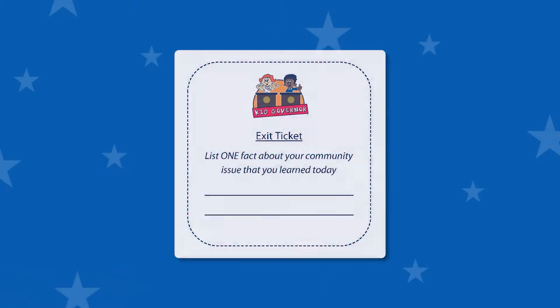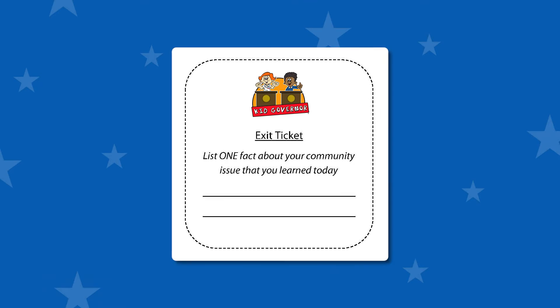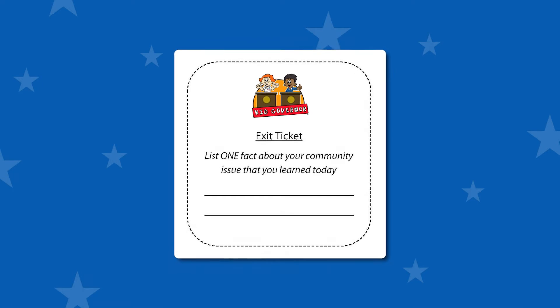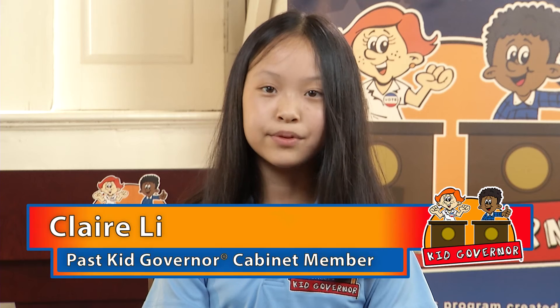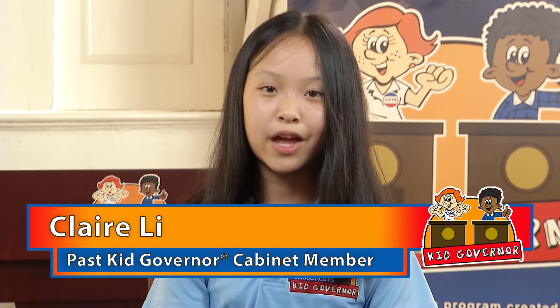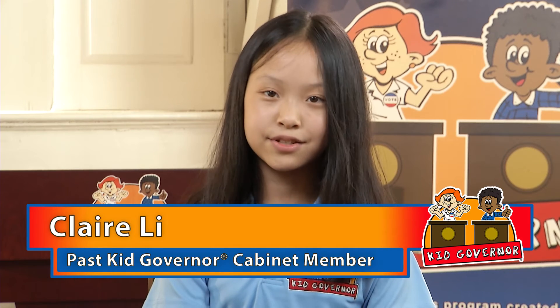You will learn many interesting facts about your community issue as you research, and your teacher will ask you to share one fact on an exit ticket. By the end of Lesson 7, you will have chosen a community issue that you care about and researched the issue. The next lesson will help you synthesize all of this information into a kid governor platform.